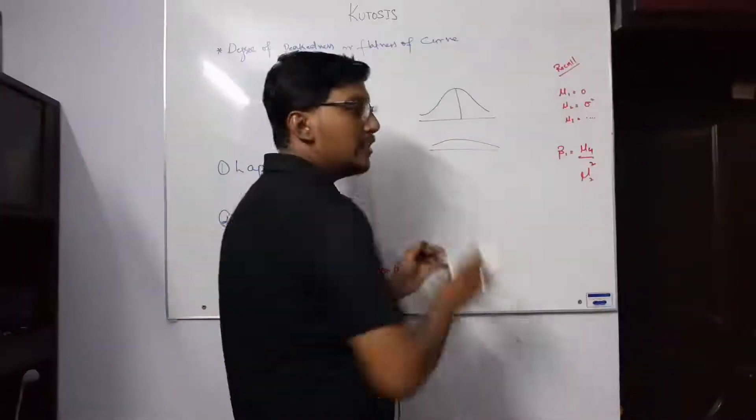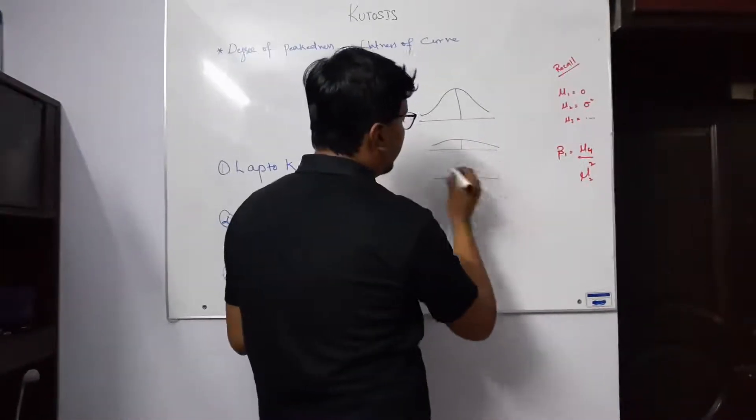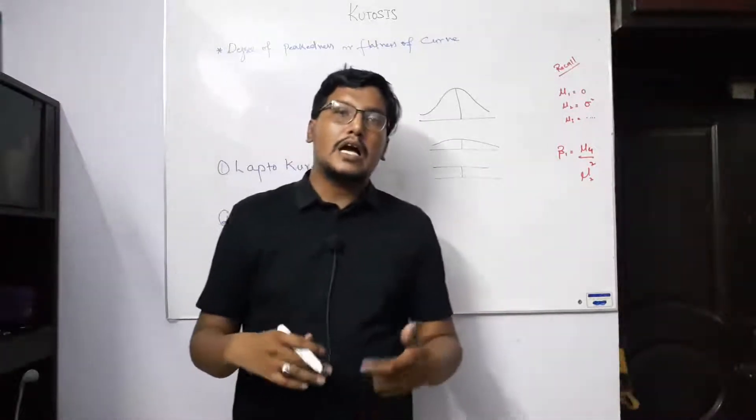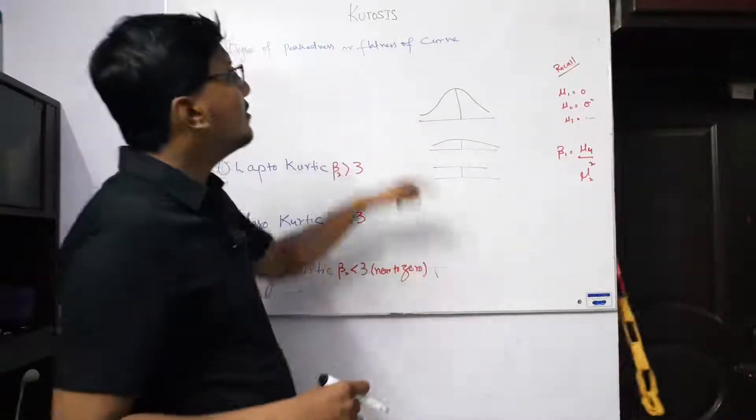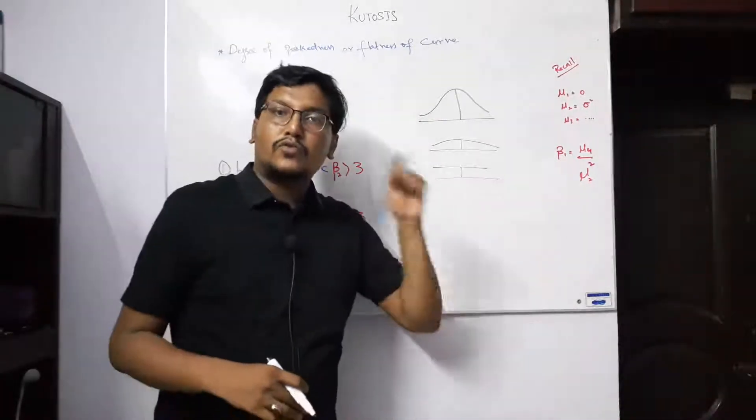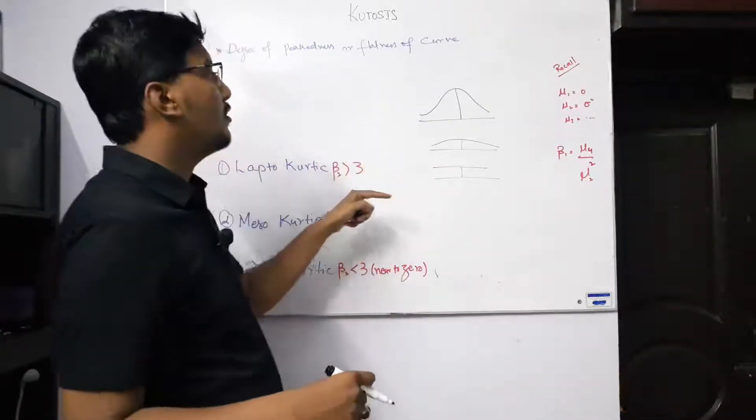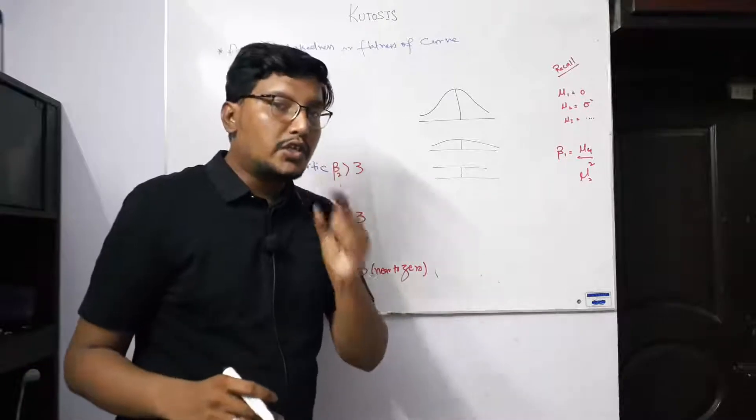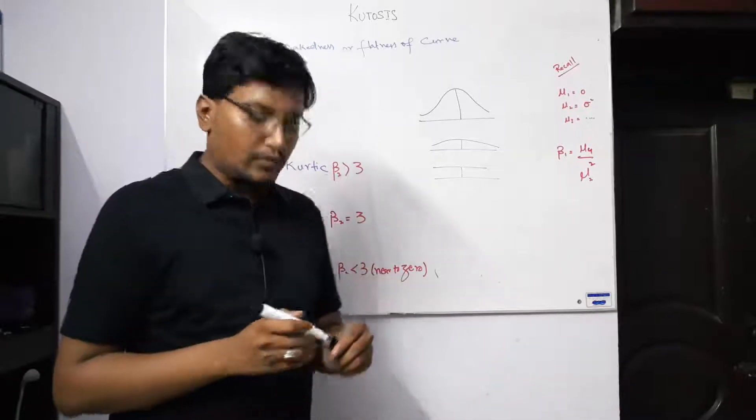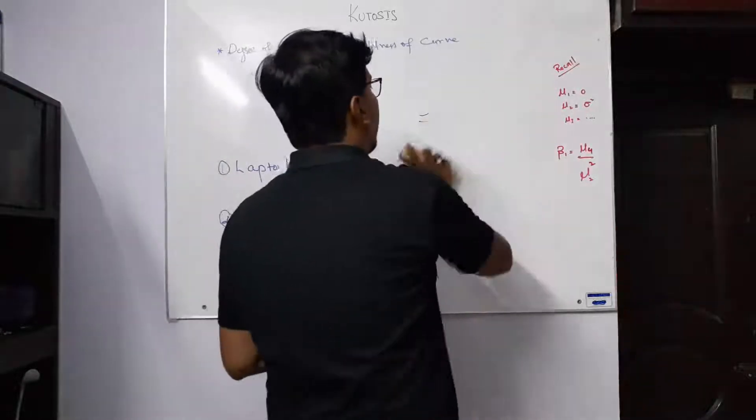We are interested in this shape because this is a normal curve. To understand, to find out the normal curve, to judge whether our distribution is following the normal distribution or not, we have to study not just skewness but skewness and kurtosis together. When we study them together, we can understand how we can obtain the normal distribution.